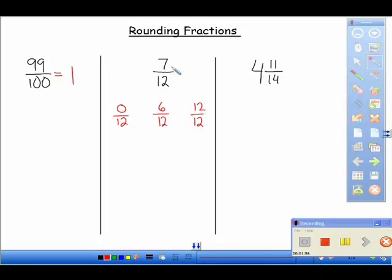Well, first of all, seven is greater than six, so it's going to have to go between here. And is seven closer to six, or is it closer to twelve? Well, it's one away from six. It's five away from twelve, so it's closer to this fraction. And that fraction we know, that is equal to one-half. So, seven-twelfths, rounded to the nearest half, is one-half.